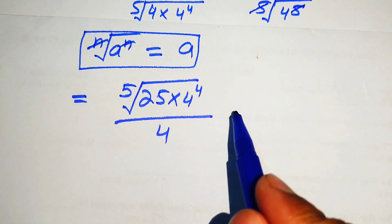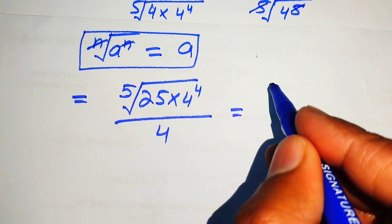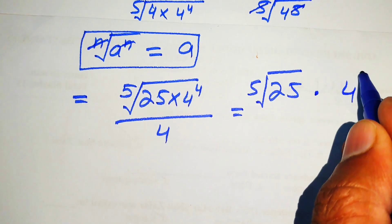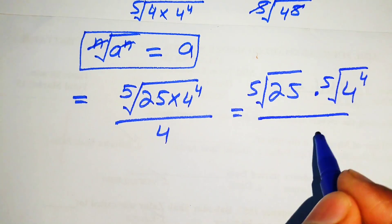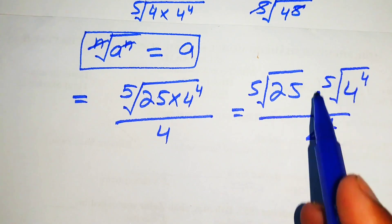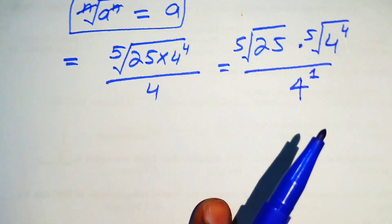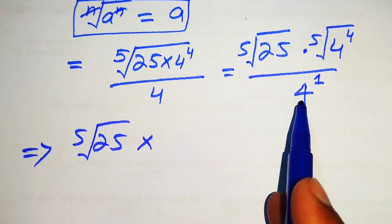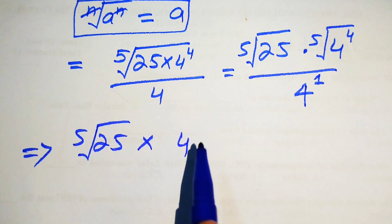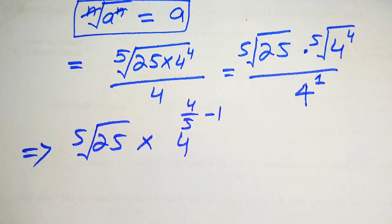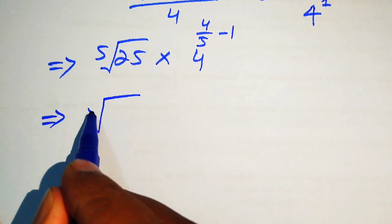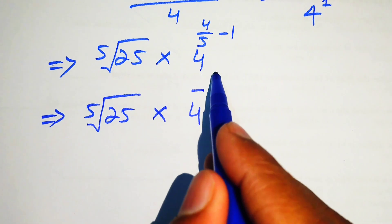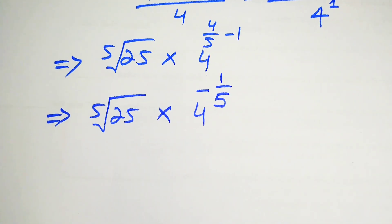We again apply the radical law, separating the 5th root on both terms: the 5th root of 25 times the 5th root of 4 to the power of 4, divided by 4. Writing in exponential form, the bases of 4 to the power of 4/5 and 4 to the power of 1 are the same, so we subtract their exponents: 4 to the power of (4/5 minus 1). Taking the LCM gives 4 to the power of (−1/5).